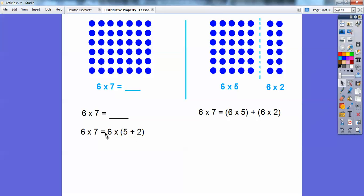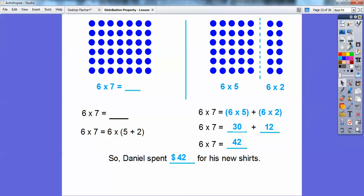Six times seven equals six times five plus six times two. If I distributed this six through, it's 6 times 5 plus 6 times 2. Six times five is thirty, and six times two is twelve. So when we add those together, we get forty-two. Six times seven equals forty-two. Daniel spent forty-two dollars for his new shirts.